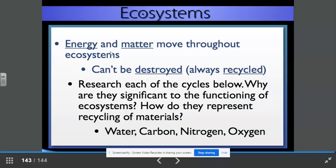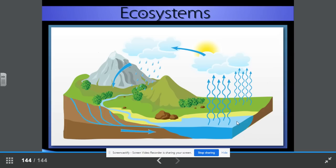Energy and matter move throughout ecosystems. It can't be destroyed. It's always recycled. Research each of the cycles below. Why are they significant to the functioning of ecosystems? How do they represent recycling of materials? Water, carbon, nitrogen, and oxygen. Here you have a diagram of the water cycle. I would go ahead and label this and be familiar with the water cycle. Make sure you know all of the names such as evaporation, condensation, precipitation, runoff, collection, and so on.